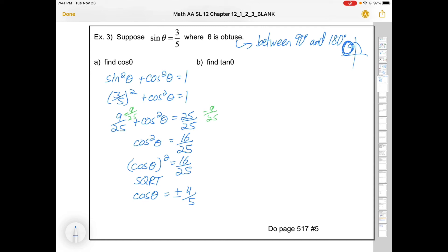Can we narrow down which one it is? I think in this case we can because we know it's in this second quadrant. And in that second quadrant, cos is negative. So since we're in quadrant two, because theta is obtuse, cos is negative. So it's going to be negative four fifths. Cos is negative in that quadrant.